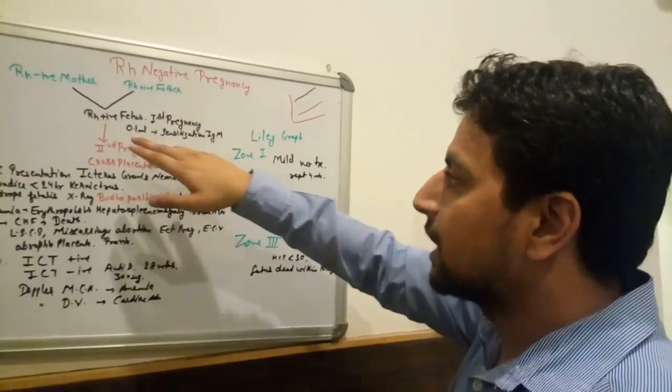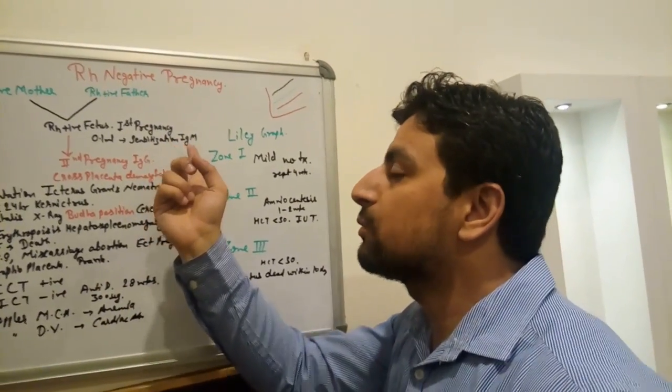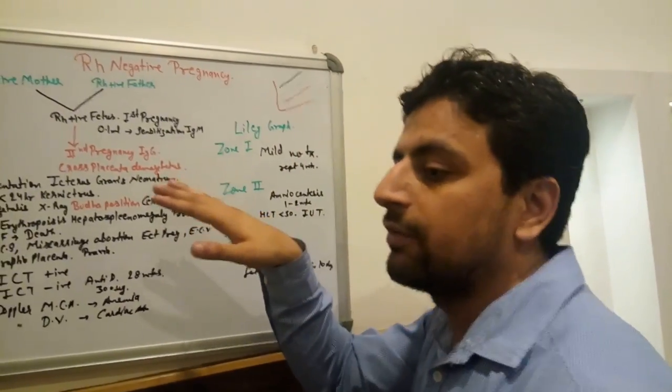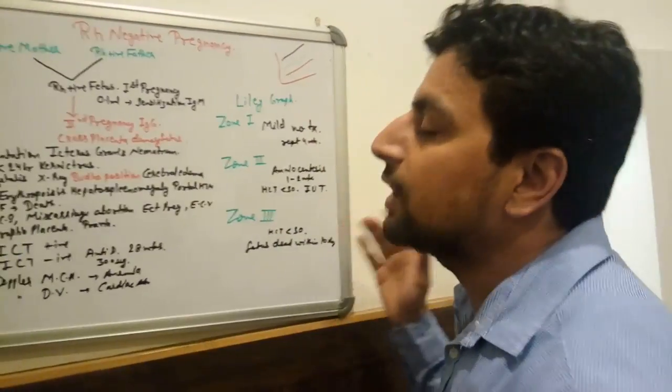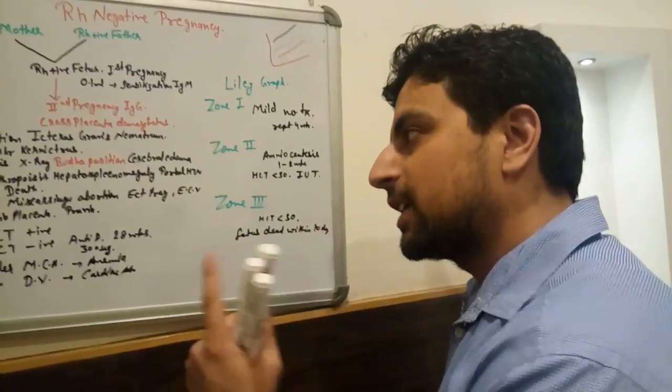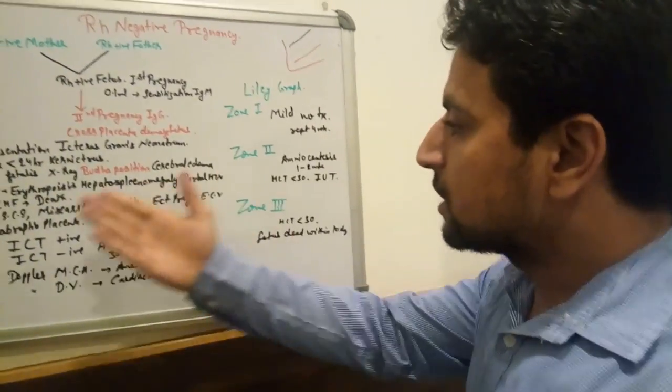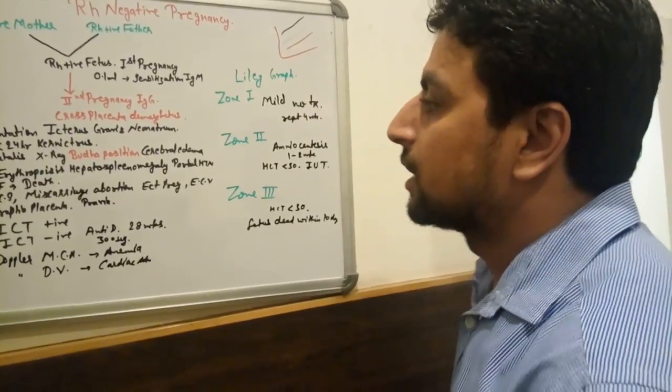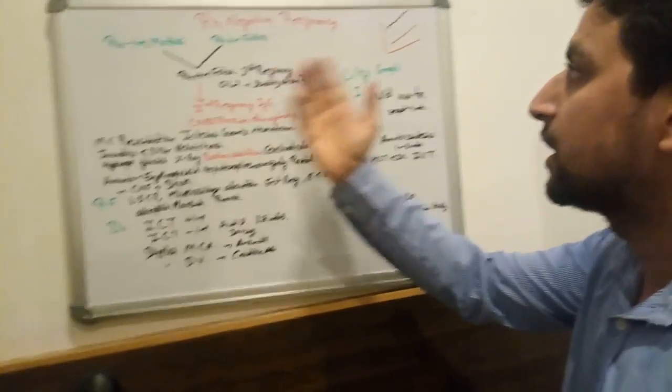Which pregnancy is harmful in Rh negative pregnancy with Rh positive fetus? It's second pregnancy, but first pregnancy can also be harmful if mother is already transfused. But in ABO incompatibility, the first pregnancy is harmful.